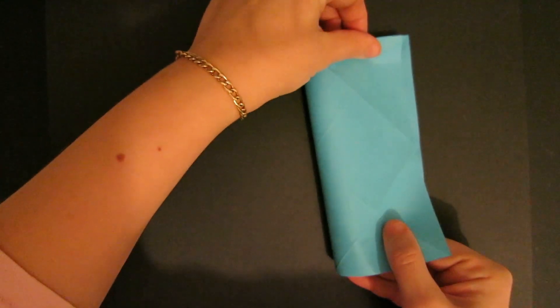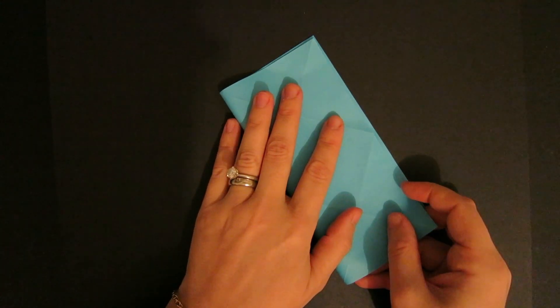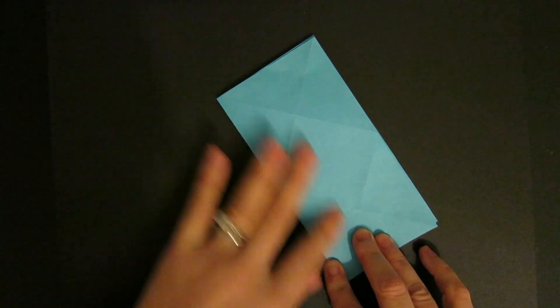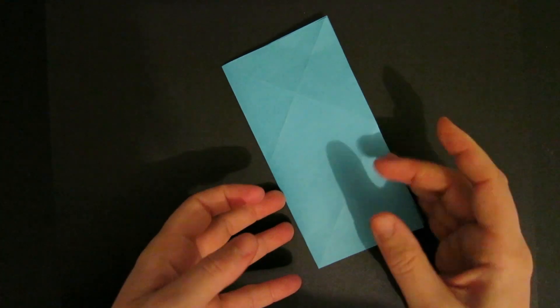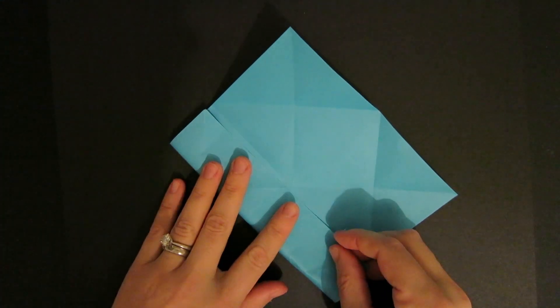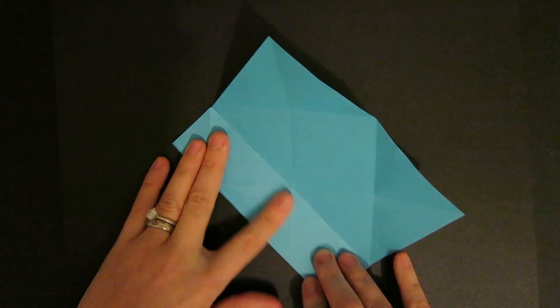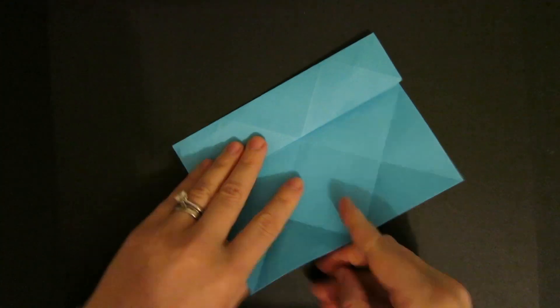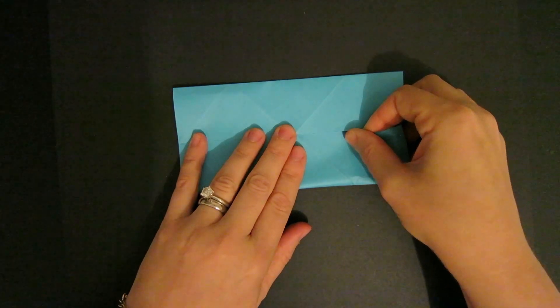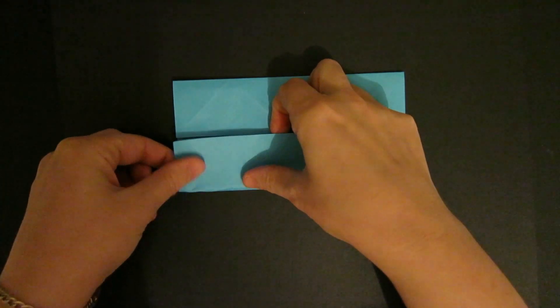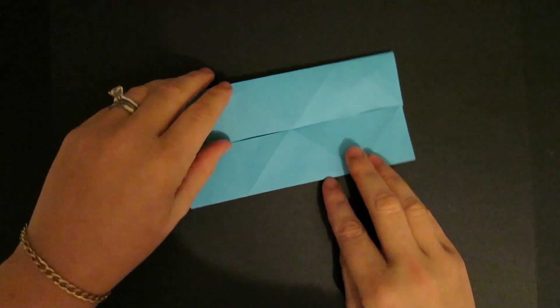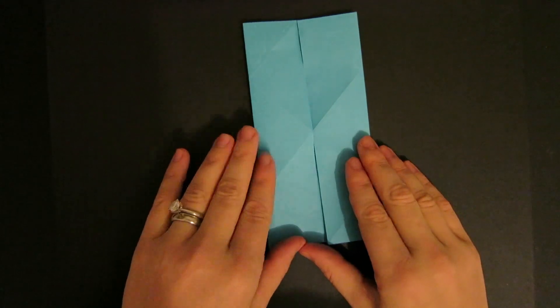Now we're going to fold your model like a book and open and then fold each side into the middle at that crease that you just made. And make sure they're accurate and that you're not folding over because it won't fold up correctly if you don't.